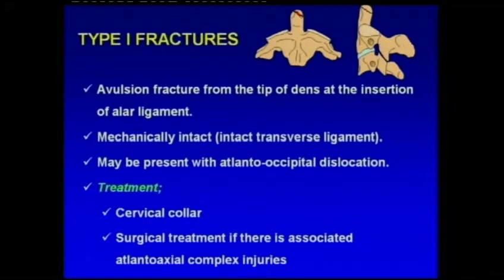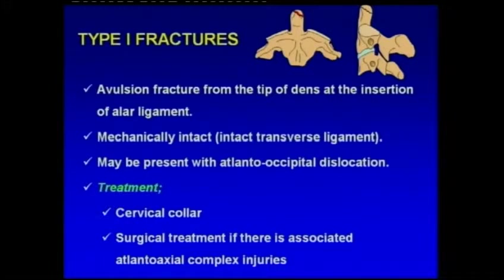Type 1 fractures are avulsion fractures from the tip of the dens at the insertion of the alar ligament and are mechanically intact. Conservative treatment is sufficient. If there is associated atlanto-axial complex injury, surgical treatment is mandatory.